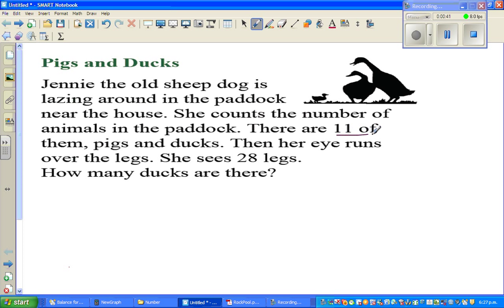So let us write that. P for pig and D for ducks. So first information is P plus D is 11. Now what is the 28 legs? Now pig has how many legs? Four legs.